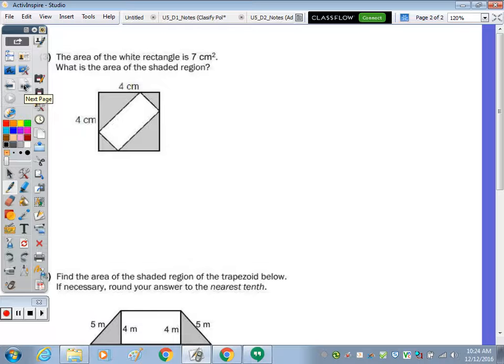Number 3. The area of the white rectangle is 7 square centimeters. So they already tell us this area. That was nice of them. What is the area of the shaded region? Well, it looks like we have a square. It's 4 by 4. So we're going to take the area of the square minus 7, because they already told us the area of that unshaded part.